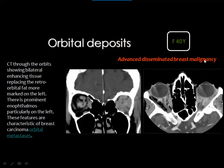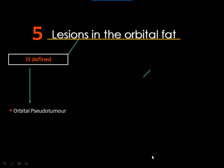A female patient with disseminated breast malignancy shows multiple irregular ill-defined masses within both left and right orbits, proved to be metastatic deposits to the orbital cavity. We have now covered the globe, optic nerve, lacrimal gland, and extraocular muscles. We move to the fifth anatomic compartment: the orbital fat and bony orbits.